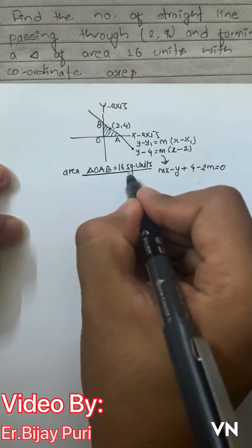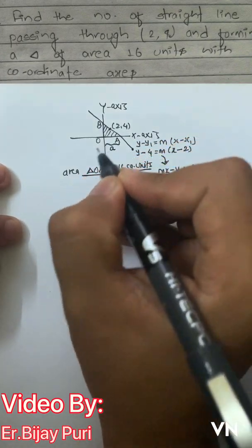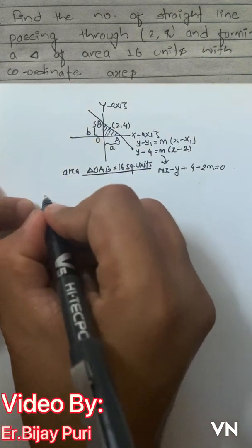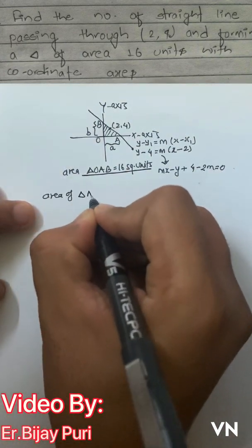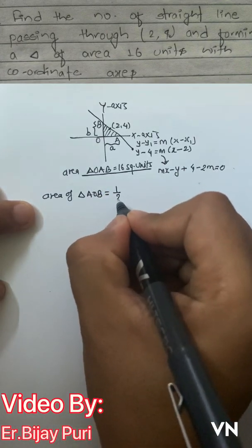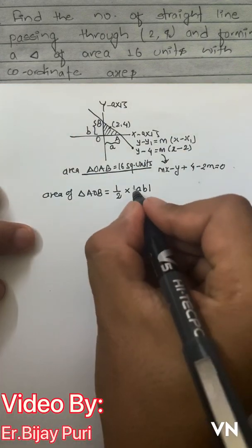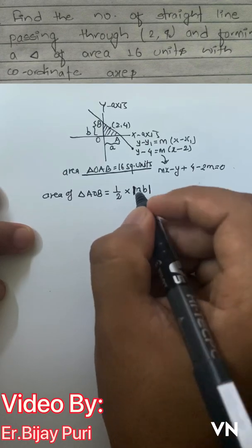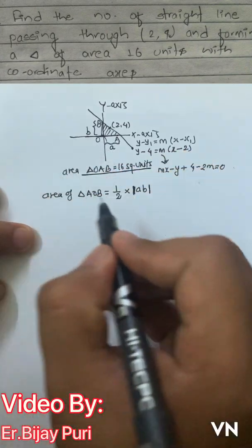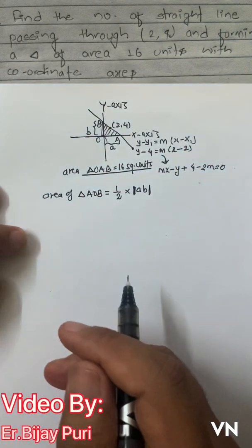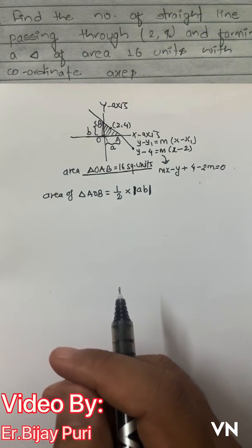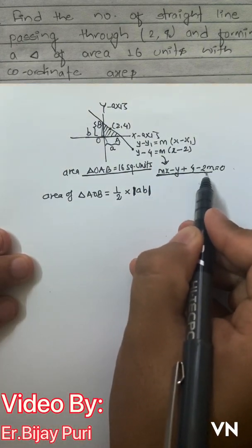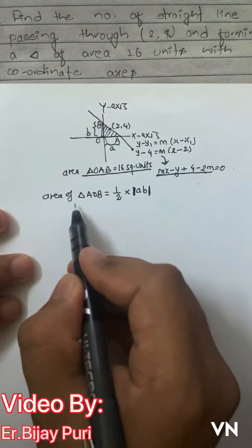If a line makes an intercept 'a' with the x-axis and intercept 'b' with the y-axis, then the area of triangle AOB is half times the modulus of a×b. We use modulus here because the intercepts may not always be positive — they can be negative — so we use modulus because area of a triangle is always positive. We need to find the number of lines passing through (2, 4) that make an area of 16 square units.